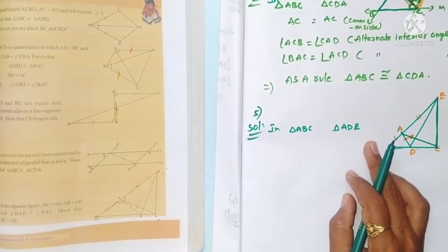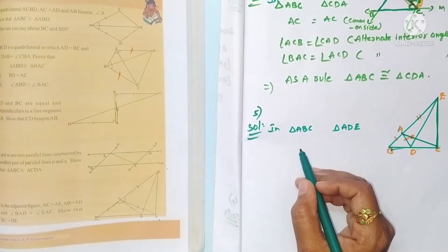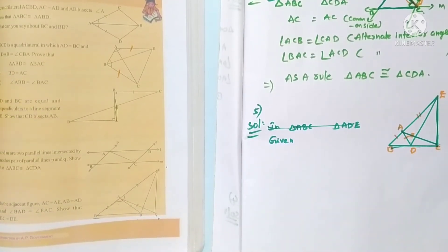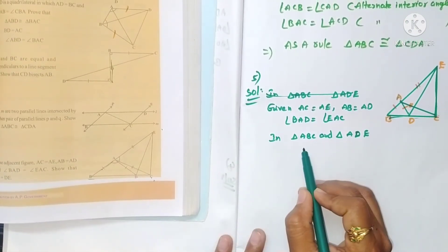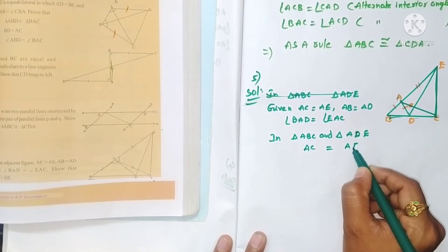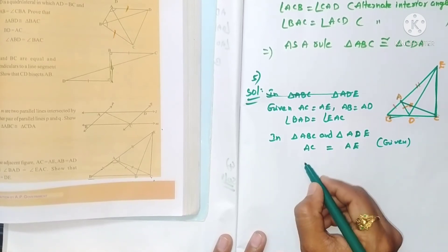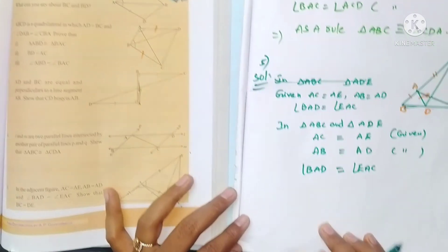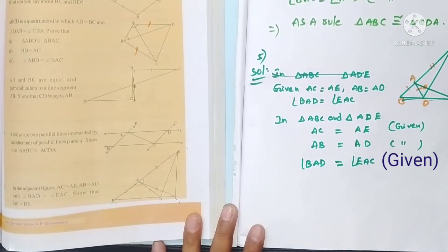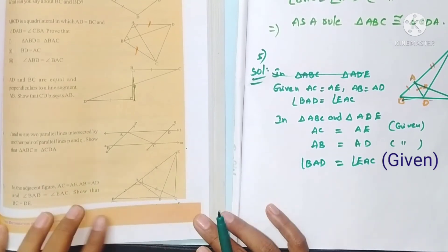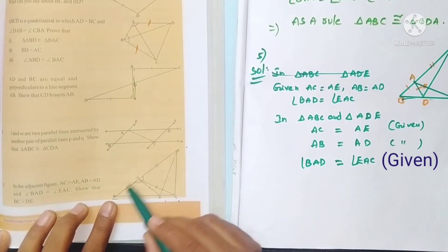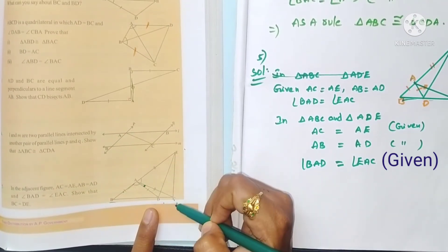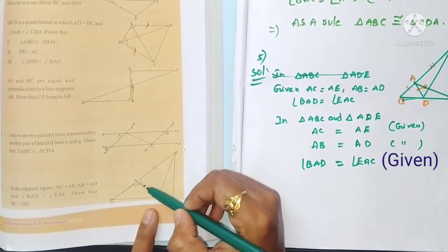Write the given information: AC is equal to AE — given. AB is equal to AD — given. And angle BAD is equal to angle EAC. But angle BAD is not directly the angle in triangle ABC; we need angle BAC. Similarly, the triangle is ADE, so we need angle EAD. This part is missing, so we add angle CAD to both sides.